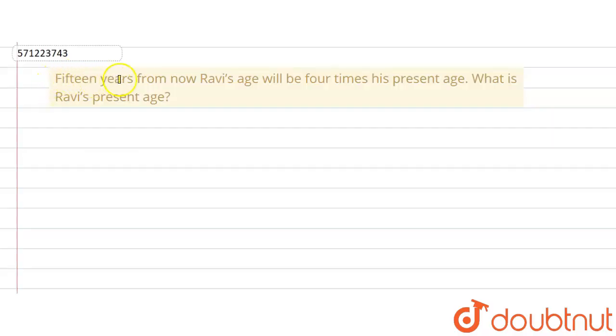The given question says that 15 years from now Ravi's age will be 4 times his present age. What is Ravi's present age? So we have been given one condition, and we are supposed to find out the present age of Ravi.